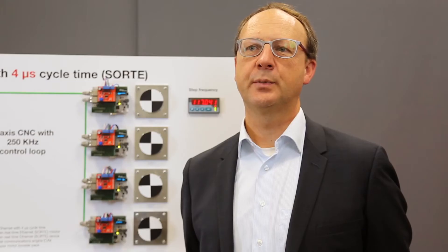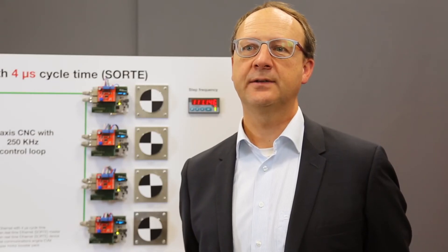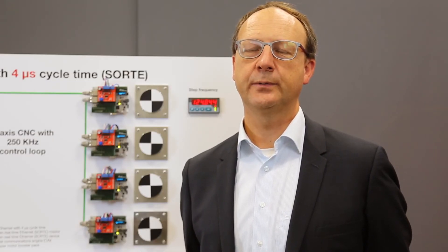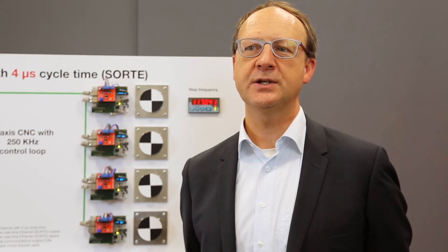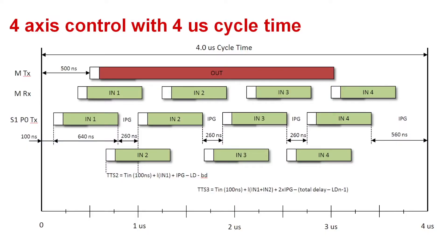The four microsecond cycle time for four axes is supported by TI industrial Ethernet and Sitara processors with integrated industrial communication IP. There is one multicast packet to all four devices which contains 16 bytes of output data, and each device sends back 8 bytes of input and diagnostic data to the master.